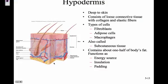The hypodermis is the last thing for today — it's deep to the skin, underneath the dermis, and it's actually not a layer of the skin. It has adipose tissue, macrophages, fibroblasts, and is also called subcutaneous tissue. It contains about one half of the body's fat. The hypodermis functions as an energy source and provides insulation and padding.